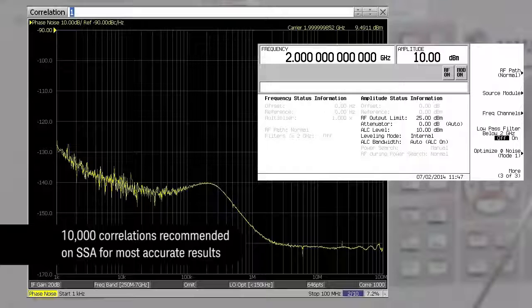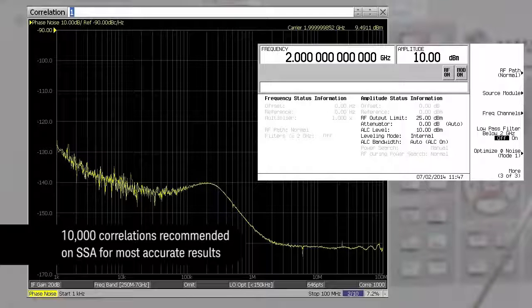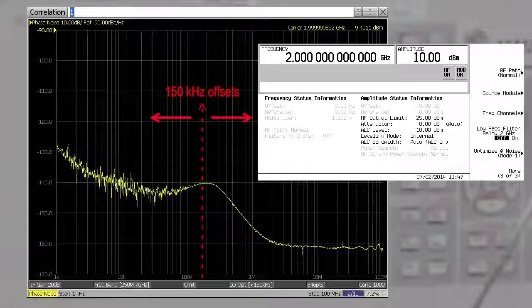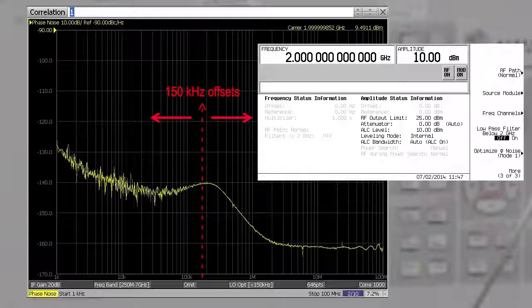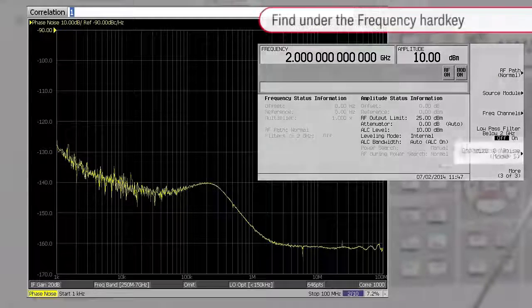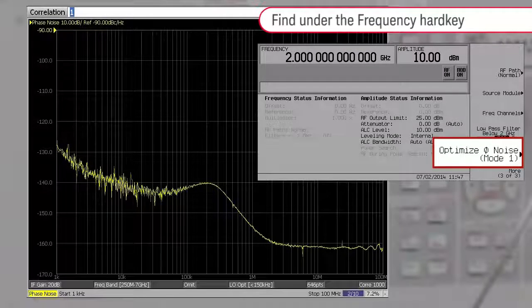In this first example, the PSG can be optimized for phase noise less than or greater than 150 kilohertz offsets. This can be ideal for blocker or interferer testing applications. You can find this key under the frequency hard key.